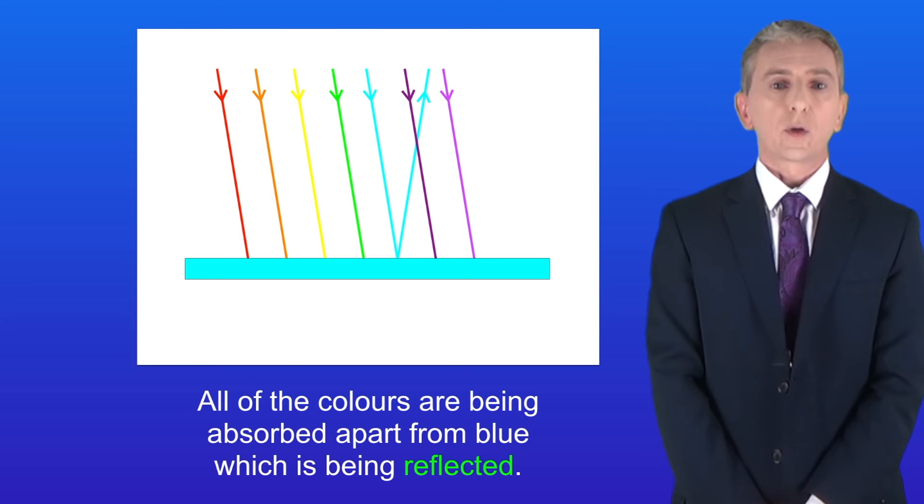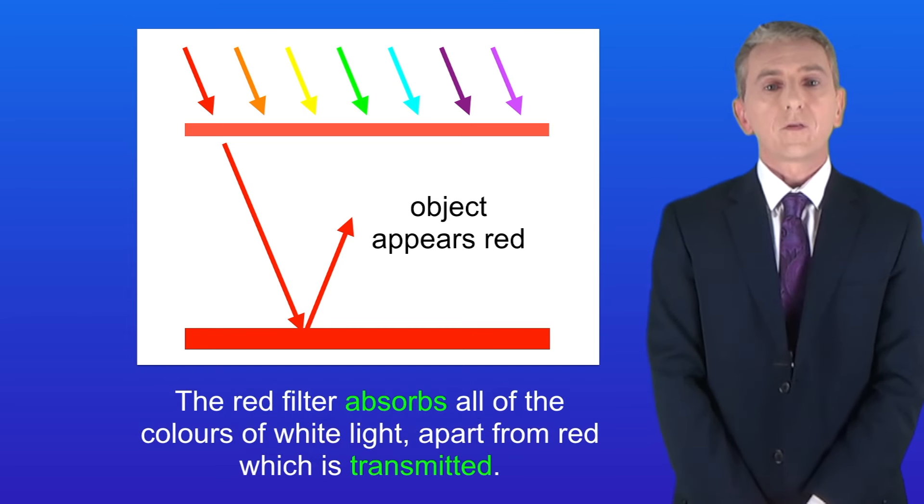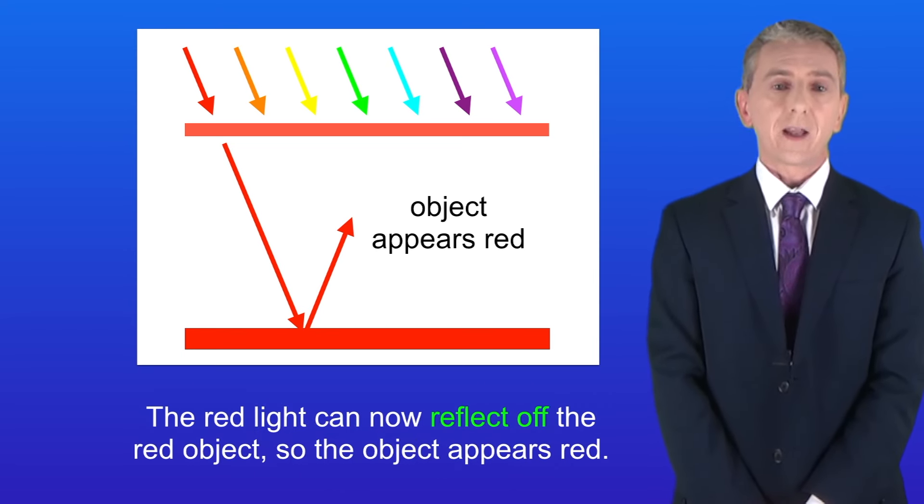Okay, so what happens if we combine colored objects with colored filters? This shows a red object and a red filter. The red filter absorbs all of the colors of white light apart from red, which is transmitted. The red light can now reflect off the red object, so the object appears red.